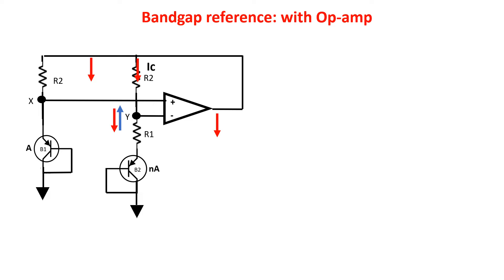If point X and Y are at the same voltage, then the same current IC flows in the two branches because at the ends of the two resistors we have the same voltages. We take the reference voltage at the output of the op-amp.